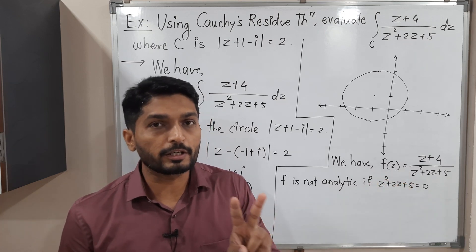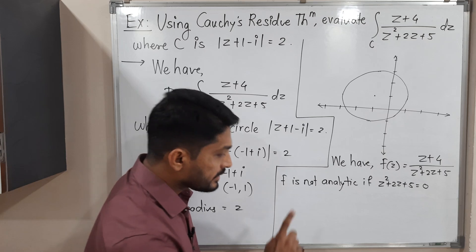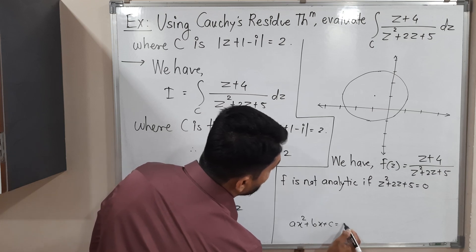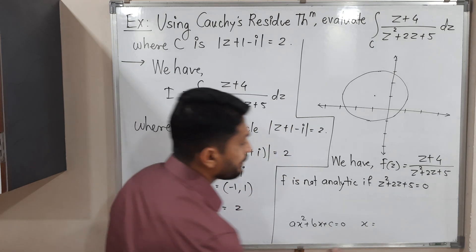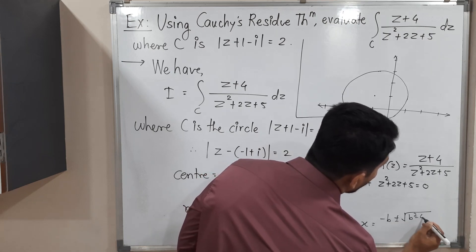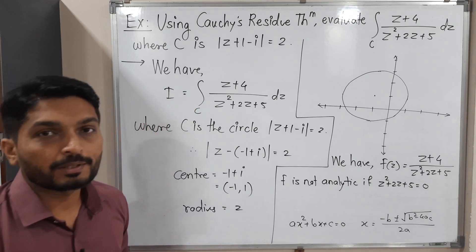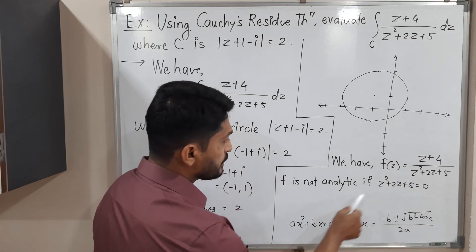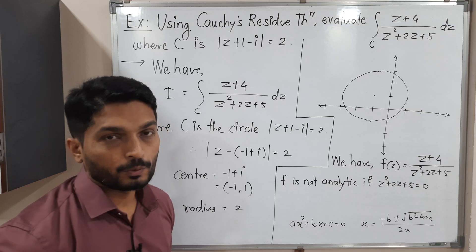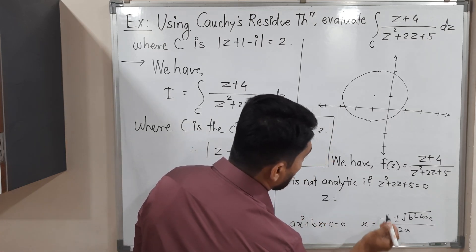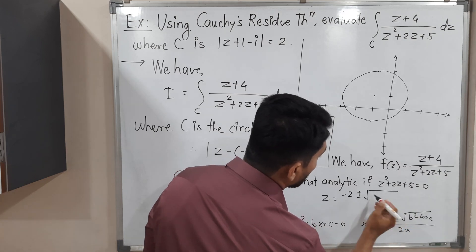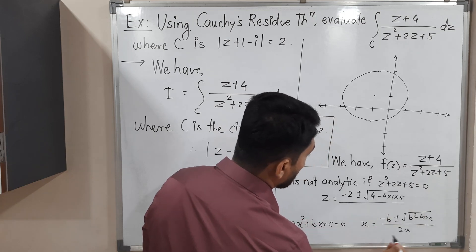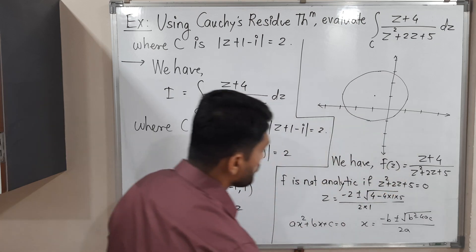The function f is not analytic where the denominator z² + 2z + 5 = 0. This is a quadratic equation. Using the quadratic formula z = (−b ± √(b² − 4ac)) / 2a, with a = 1, b = 2, and c = 5, we get z = (−2 ± √(4 − 20)) / 2.